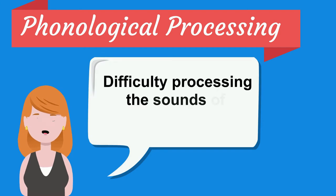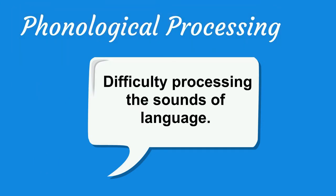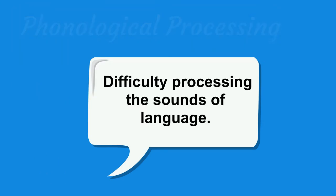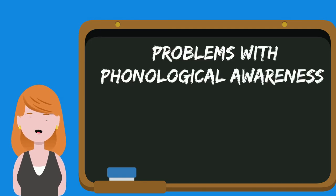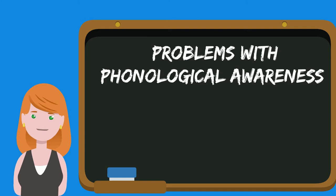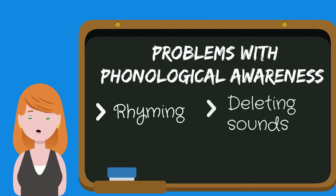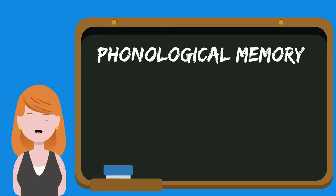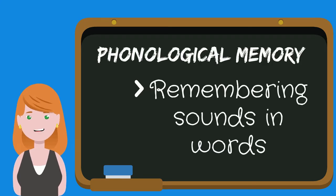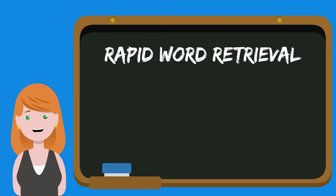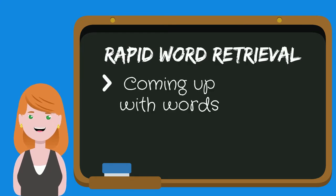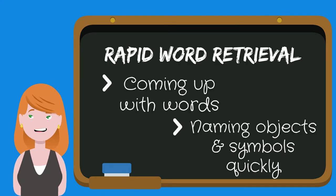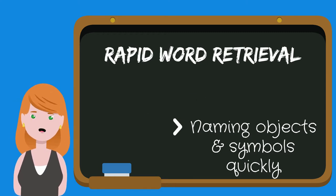Phonological processing is difficulty processing the sound of language. This means problems with phonological awareness, which would be rhyming, deleting sounds, and blending sounds. As well as phonological memory, which means remembering sounds in words, and the ability to rapidly retrieve words — that means coming up with words or naming objects and symbols quickly.